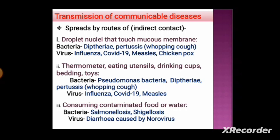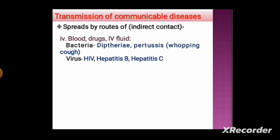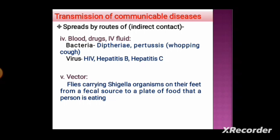Consuming contaminated food or water can spread bacterial diseases like salmonellosis and shigellosis. Shigella is found in the stool of infected people and in contaminated food, water, or surfaces touched by infected persons. Viral diseases from contaminated food or water include diarrhea caused by norovirus. Blood, drugs, and IV fluids are another indirect contact route — bacterial examples include diphtheria and pertussis, and viral examples include HIV, hepatitis B, and hepatitis C.